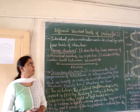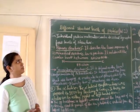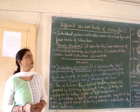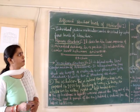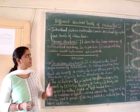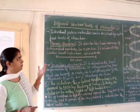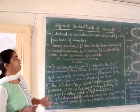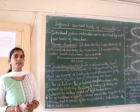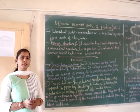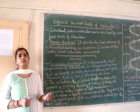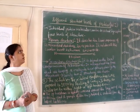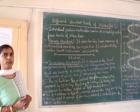Today we will study about different structural levels of proteins. Individual protein molecules can be described by up to four levels of structure — primary, secondary, tertiary, and quaternary.